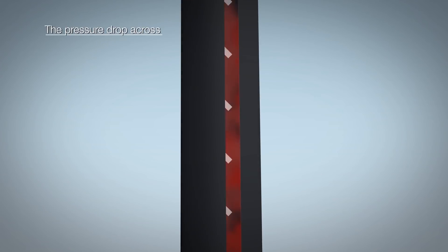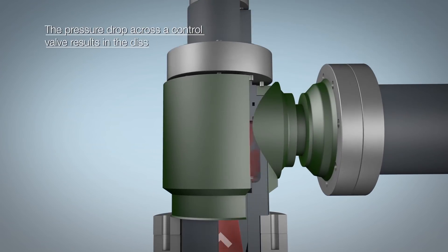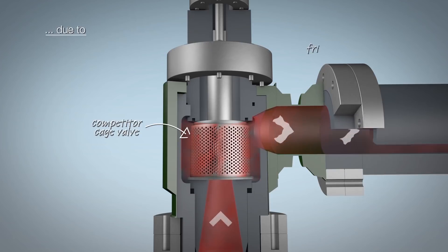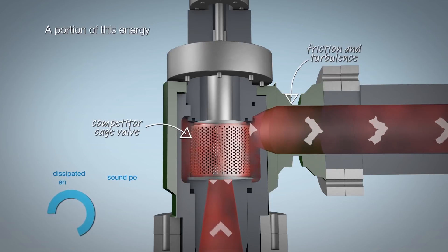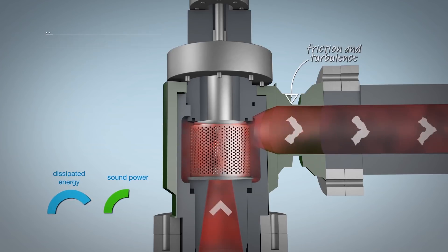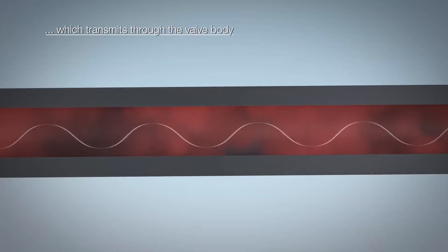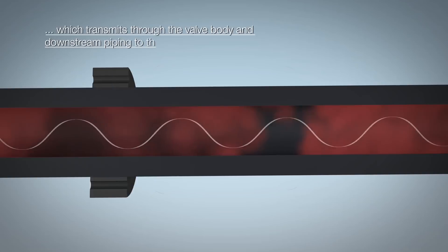The pressure drop across a control valve results in the dissipation of energy due to friction and turbulence. A portion of this energy is converted to sound power, which is transmitted through the valve body and downstream piping to the surrounding area.